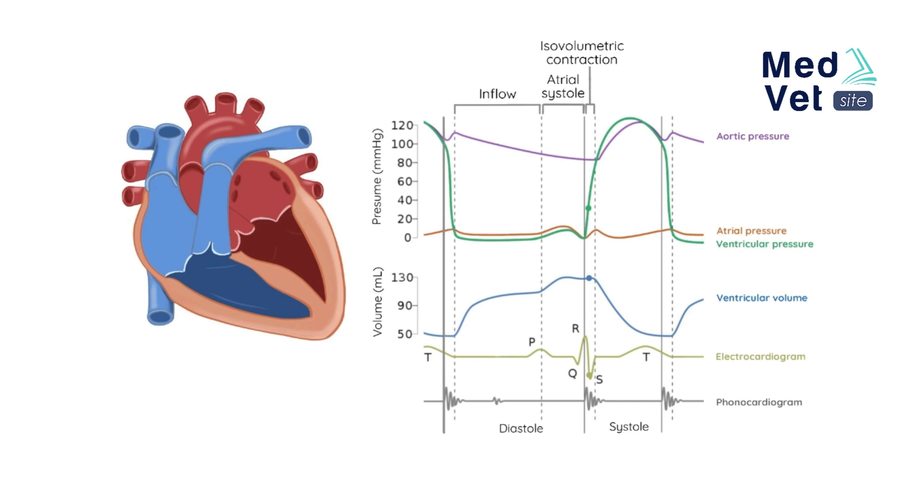When the left ventricle exceeds the pressure of the aorta of approximately 70 millimeters of mercury, it causes the aortic valve to open, starting the ejection stage. Blood begins to flow from the left ventricle to the aorta, progressively decreasing ventricular volume but at the same time increasing its pressure to approximately 120 millimeters of mercury because it continues to contract.